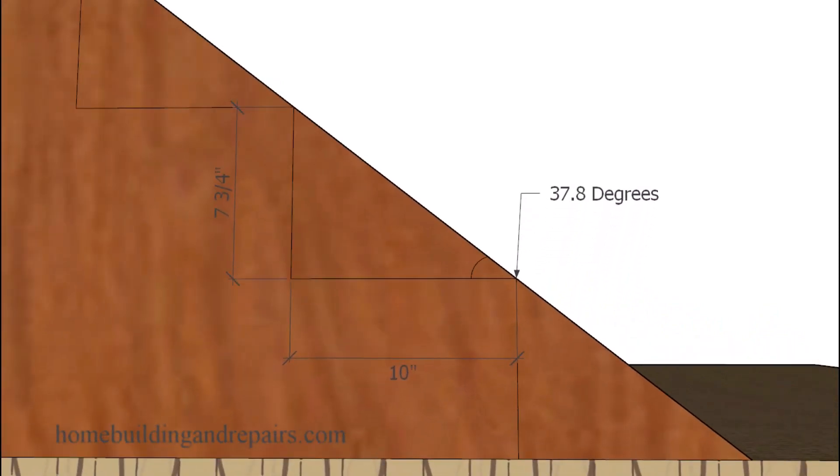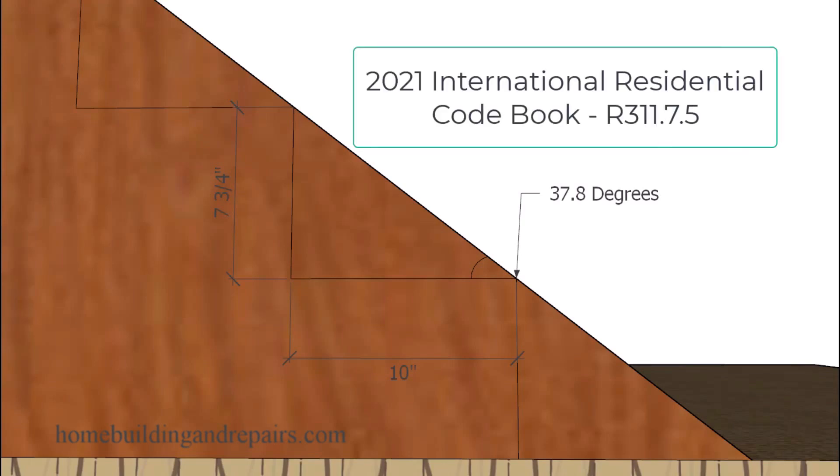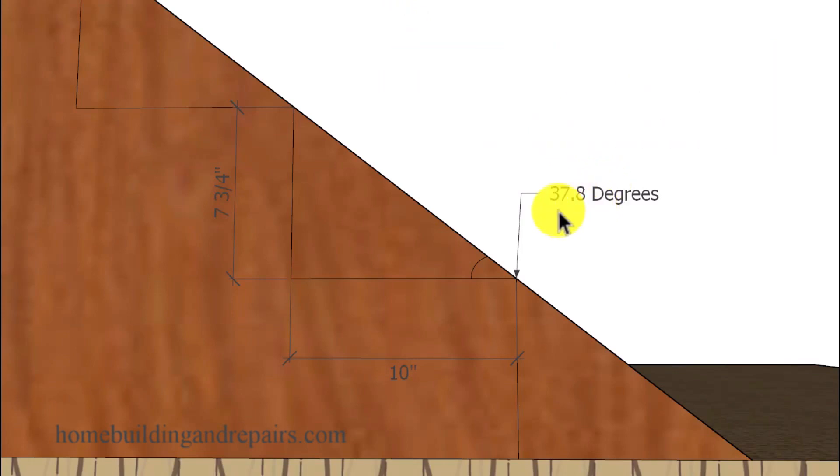So let's get started with the most common angle. This is probably going to be the one that fits the category you're looking for for residential construction. It can be found in the 2021 International Residential Building Codebook and can be used in most homes, even for your decks, along with outdoor landscaping projects. That angle is going to be 37.8 degrees and have a minimum tread or step depth of 10 inches and a maximum riser height of seven and three quarter inches.